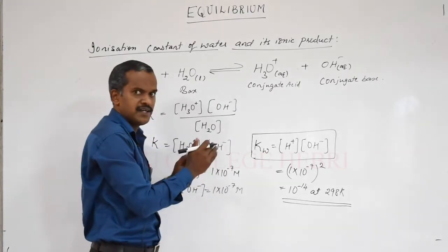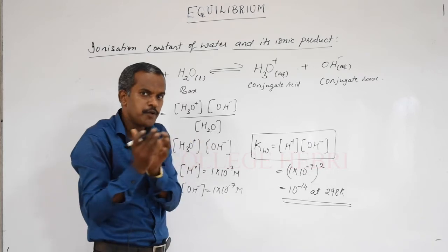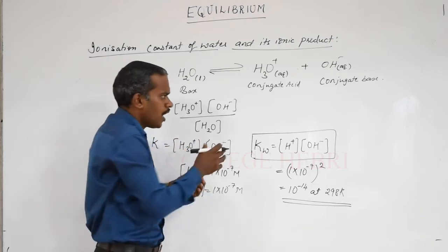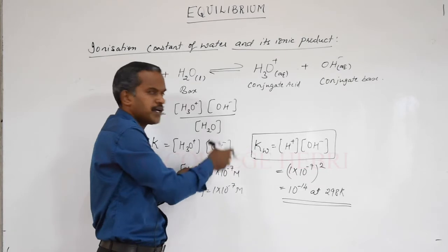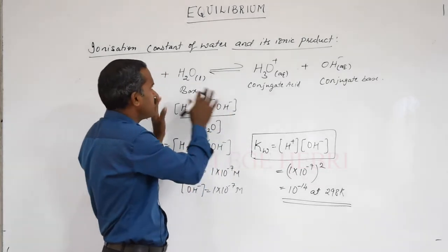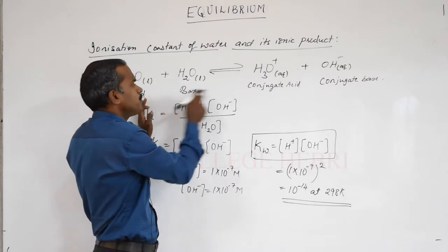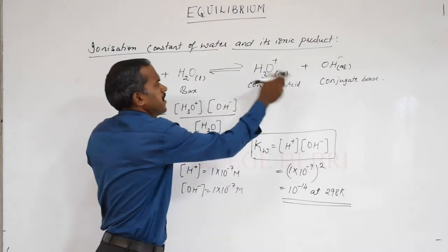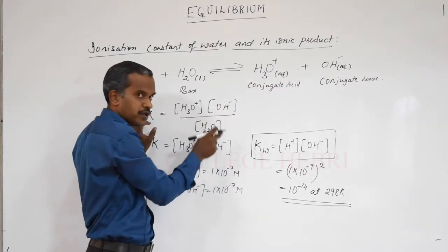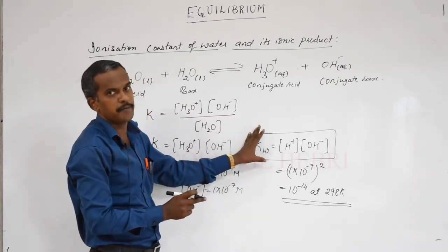Next we need to understand the relationship between unionized water and ionized water, and how they are related to molarity. From the conjugate acid-base pair we wrote for water, we understood the ionization constant of water and the ionic product of water. At 298 Kelvin, the value of Kw, the ionic product of water, is 10⁻¹⁴.